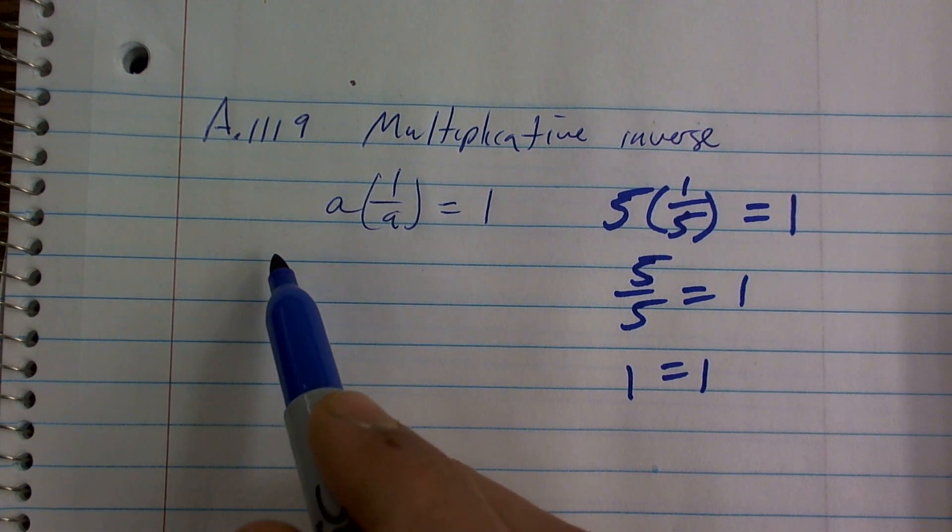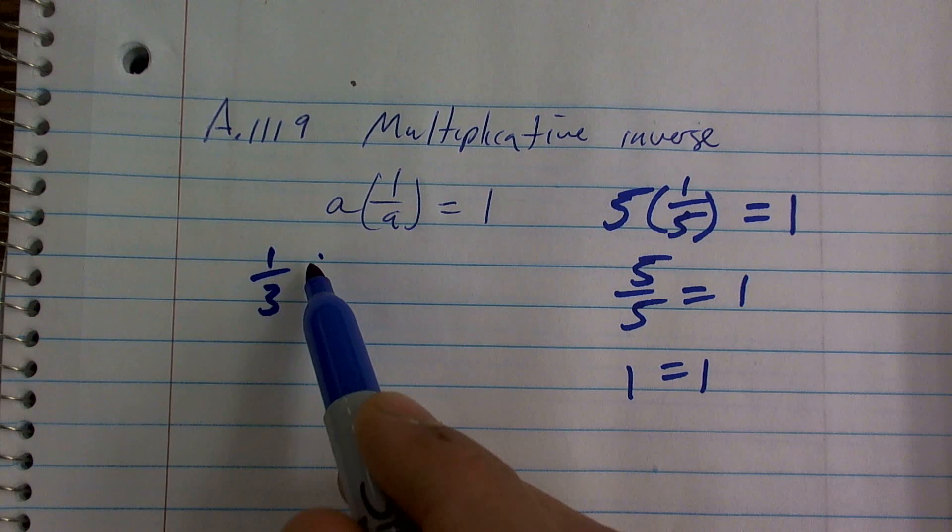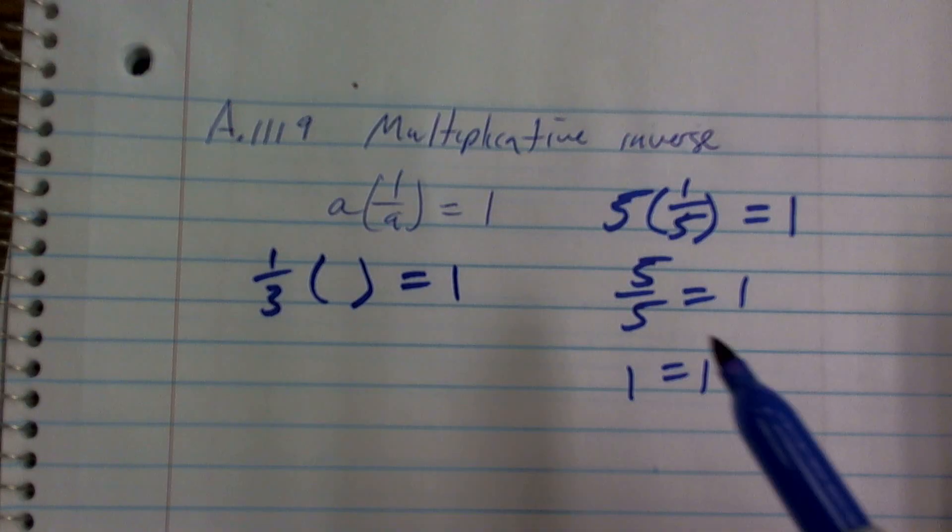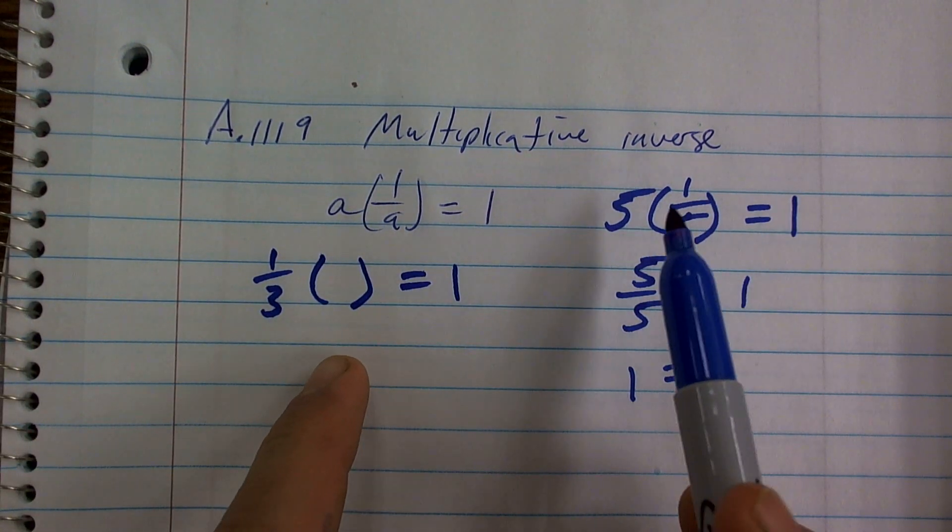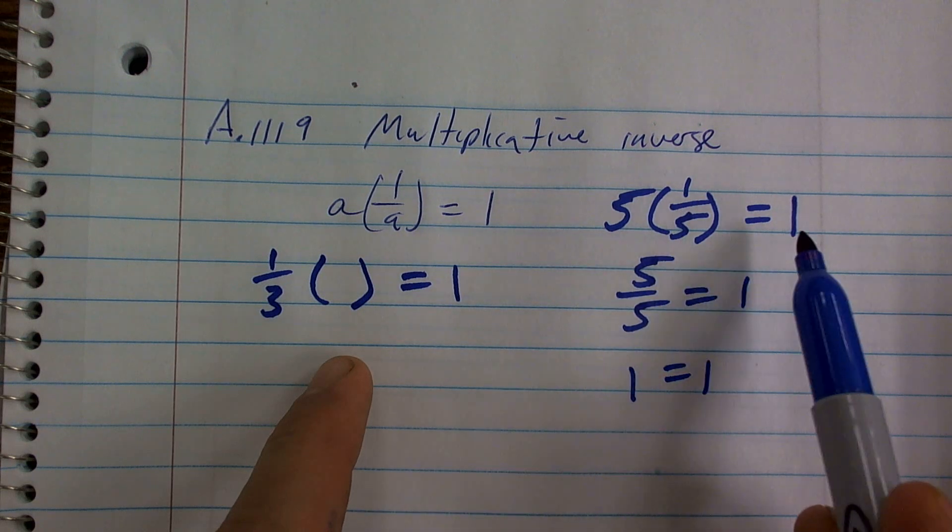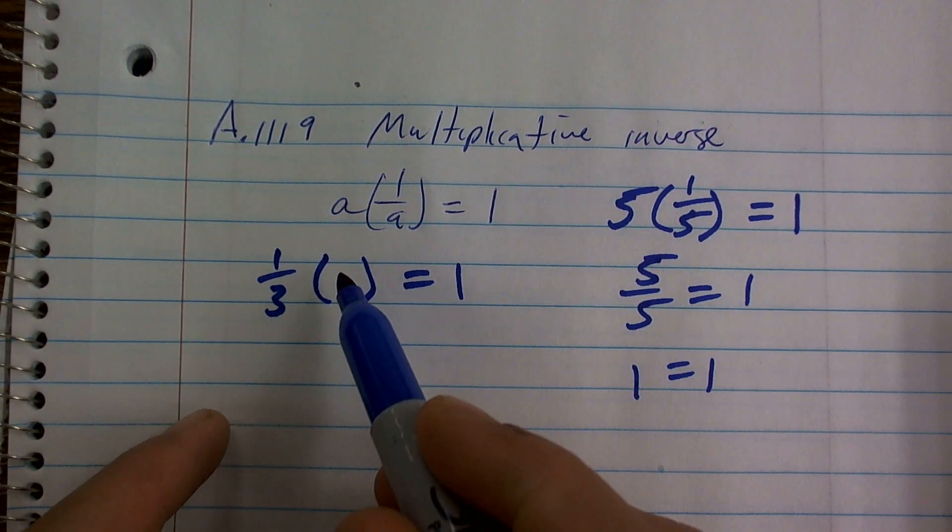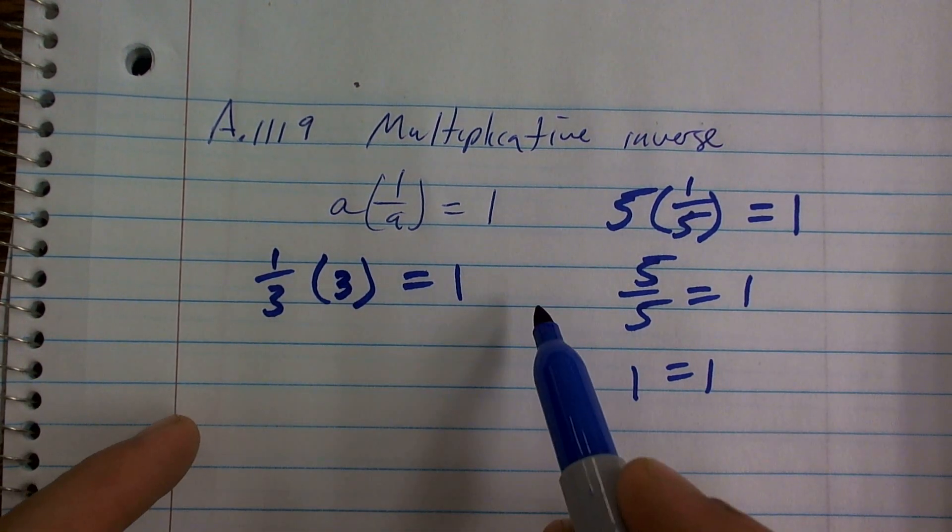So let's say, how about if I did a fraction? Let's say I did 1 third times what gives you 1? Well, just kind of like the opposite, if it's 5 times 1 fifth gives you 1, 1 third times 3 is going to give you 1.